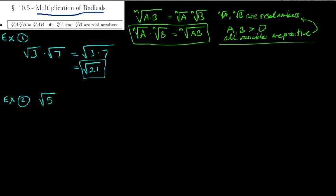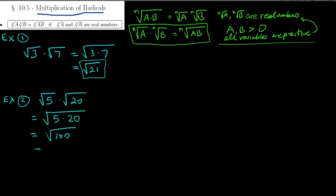Let's try another one: the square root of 5 times the square root of 20. You do the same thing — take the square root of 5 times 20. 5 times 20 is 100. So we get the square root of 100, and we can simplify that. The square root of 100 is just 10, so the answer here is just 10.